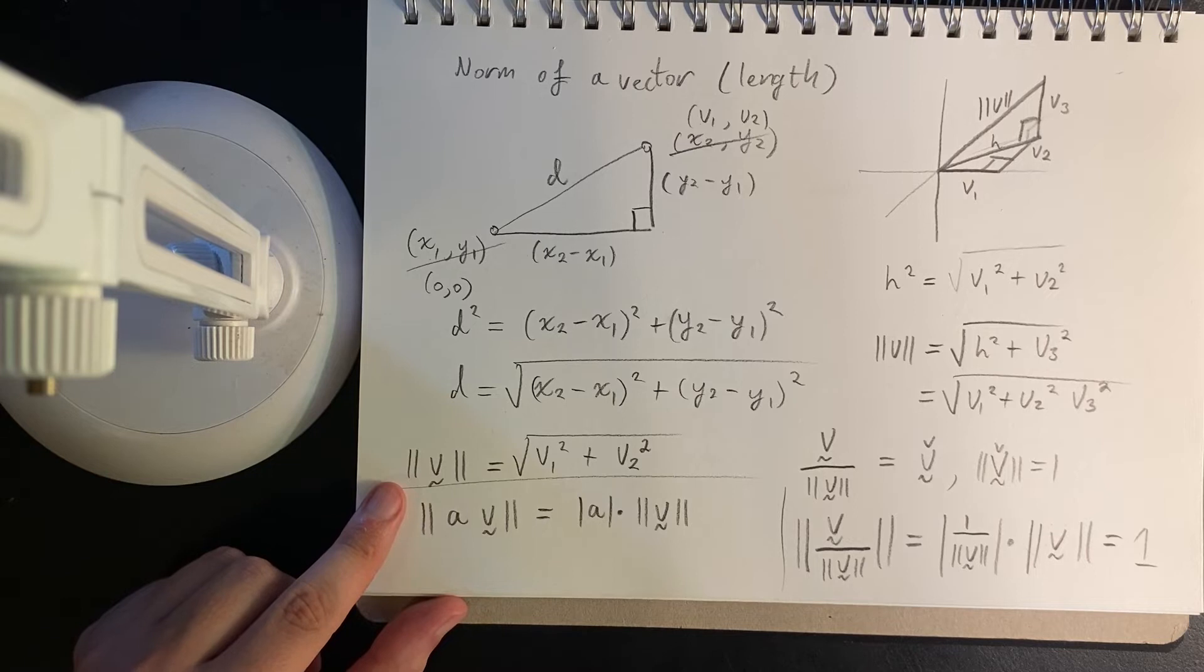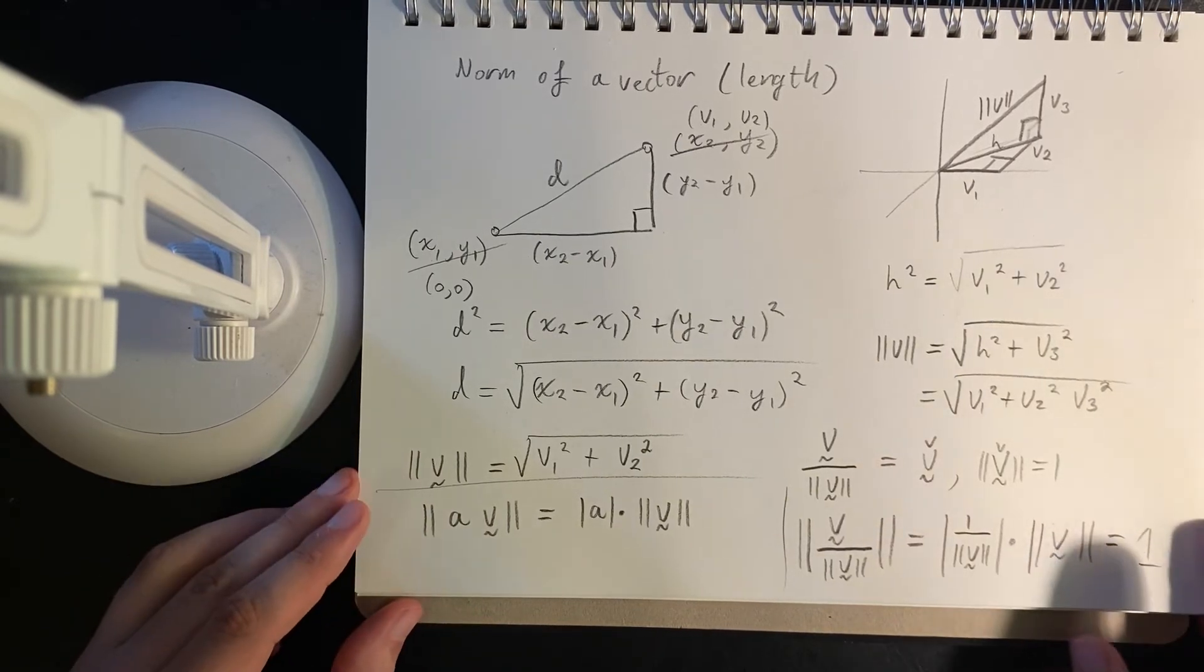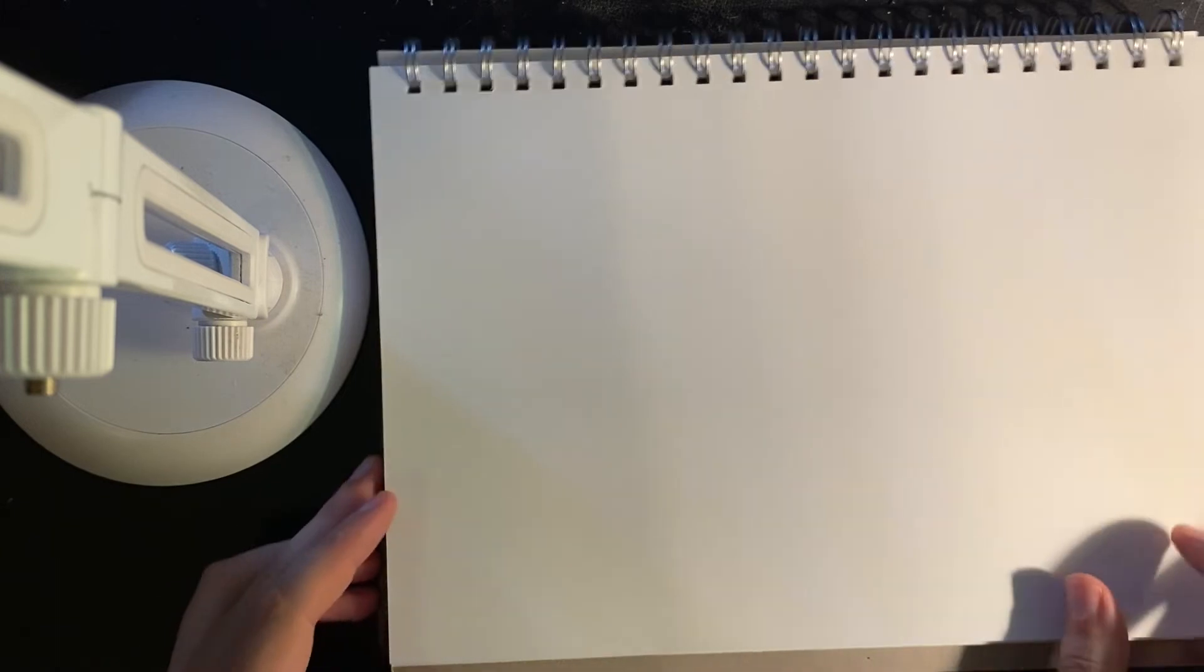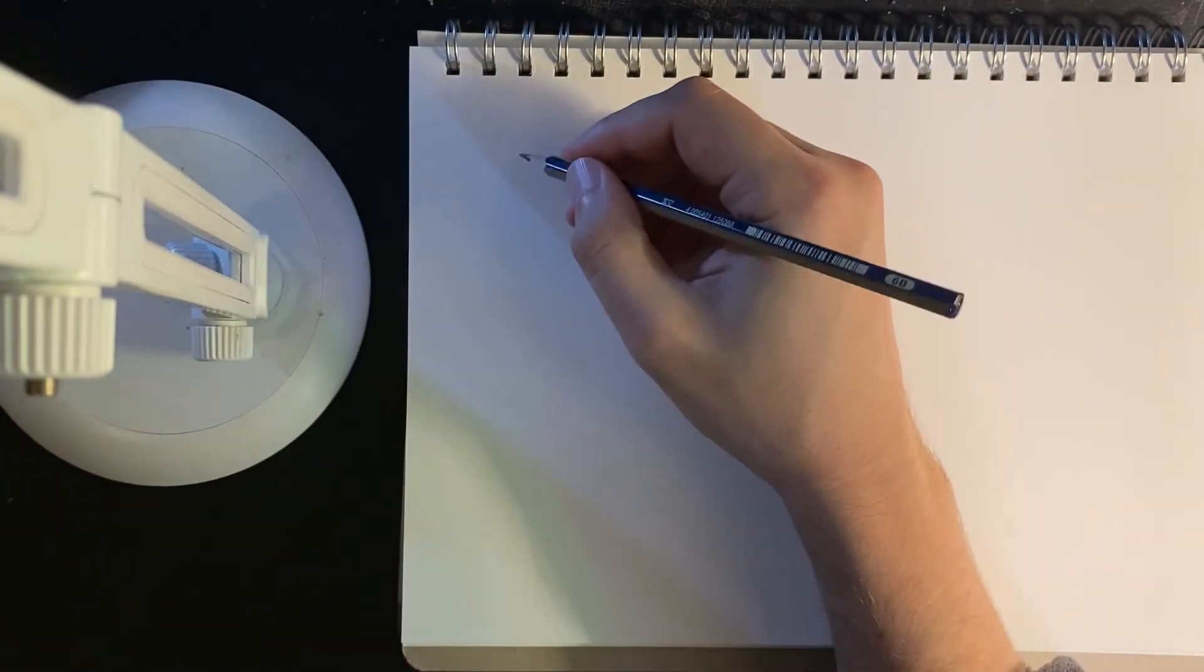And then we have another property, which I'm going to briefly mention, and then we'll prove it later. And that is called the triangle inequality. If you've done any real analysis, you'll probably be familiar with the triangle inequality. It's used in a lot of proofs.